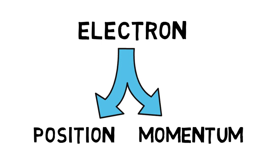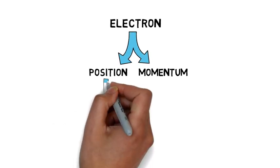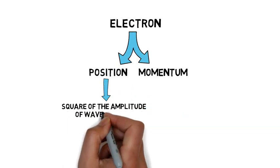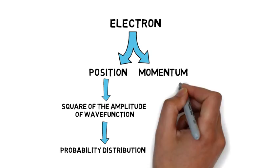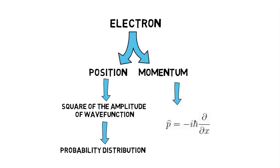If we are interested in finding the position of the electron, we have to take the square of the amplitude of the wave. This gives us a probability distribution, meaning the position of the electron is not certain and is determined in terms of probability. To find the eigenvalue of momentum, we have to operate this mathematical operator. Sounds good? If your answer is yes, then you have not paid attention. Let me tell you what I'm talking about.